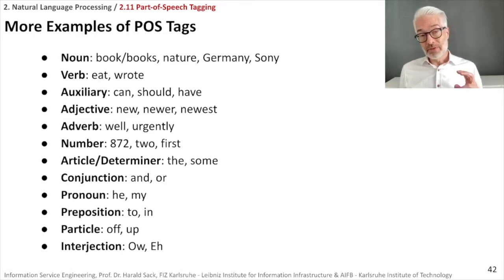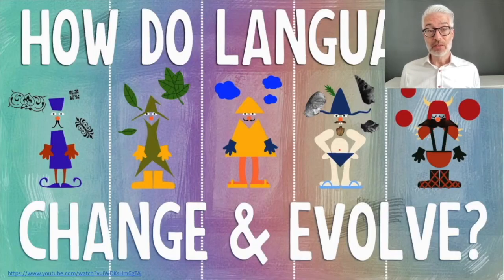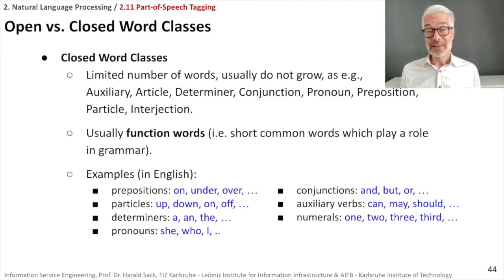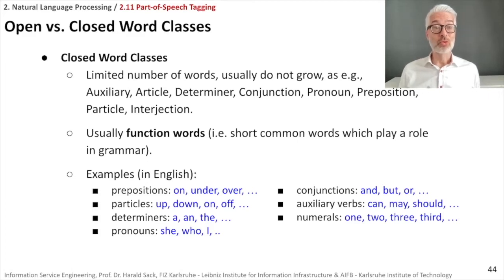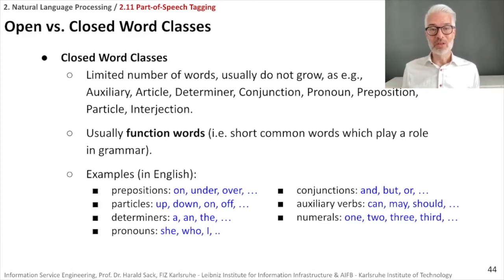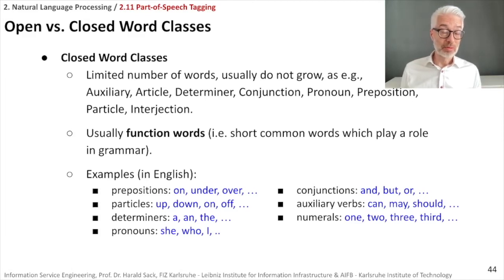Before we go deeper into how we actually compute part of speech tags, we need to look at how languages change and evolve. We distinguish between two different classes of words. There are closed word classes, which contain a limited number of words — these classes usually do not grow, because all words belonging to them are already defined, like auxiliaries, articles, and determiners. It doesn't make sense to invent a new determiner or a new conjunction. Examples of closed classes include prepositions, particles, determiners, pronouns, conjunctions, auxiliary verbs, and numerals.